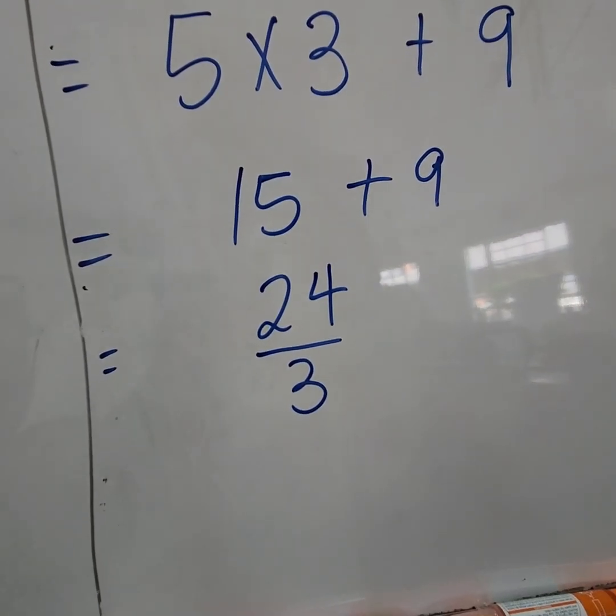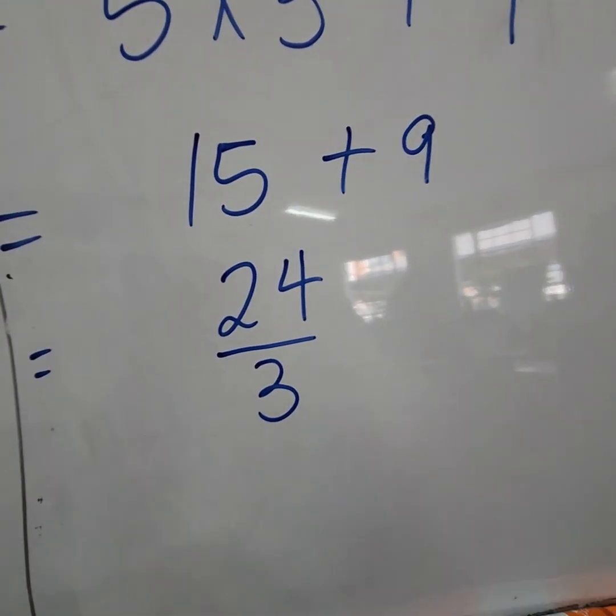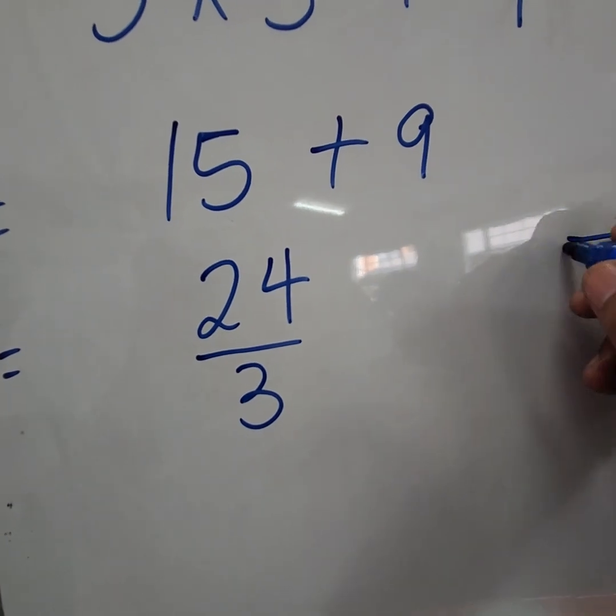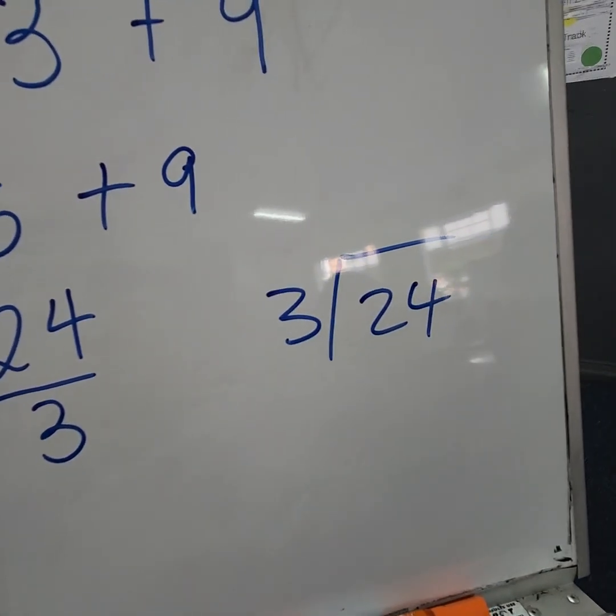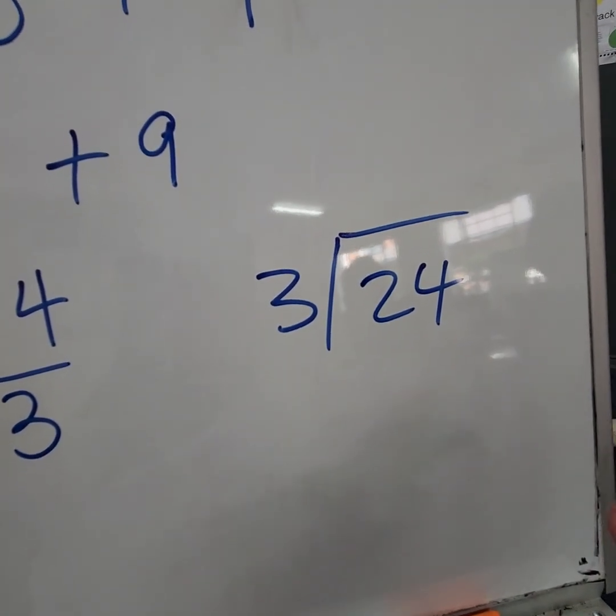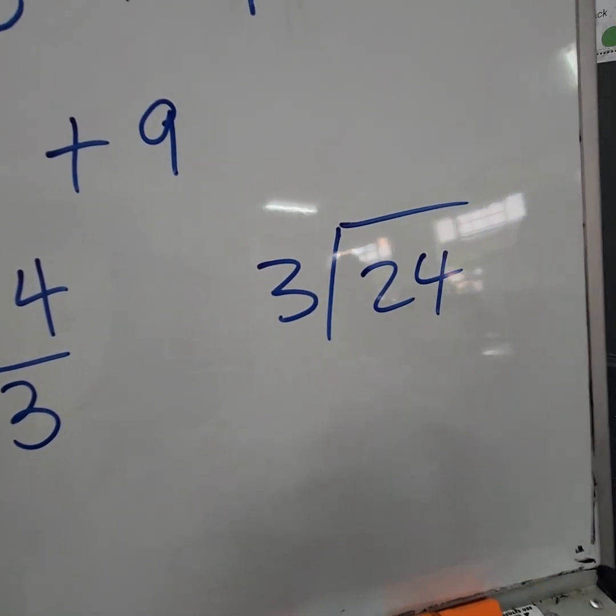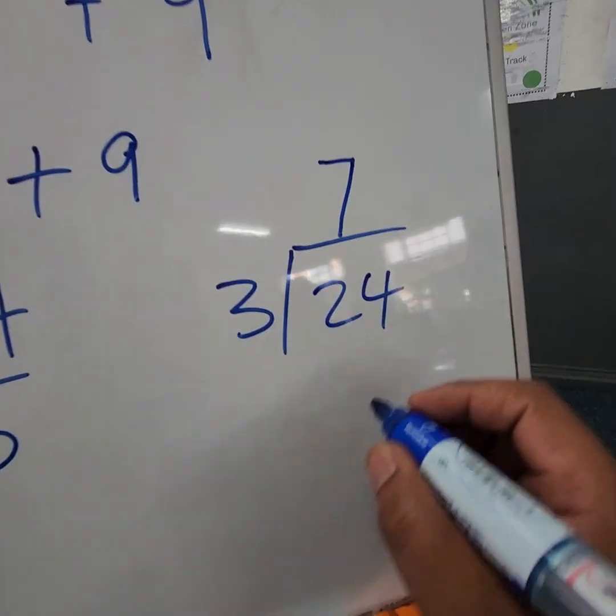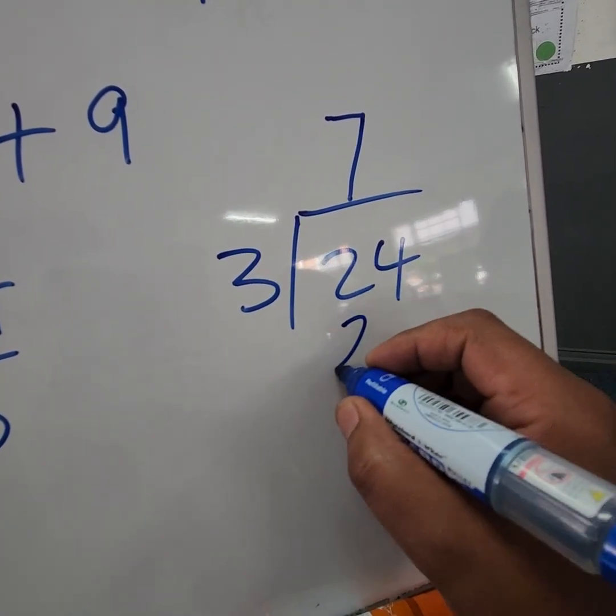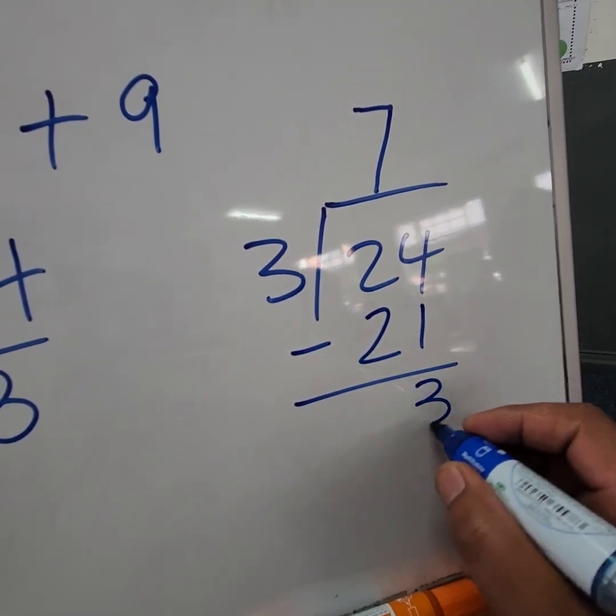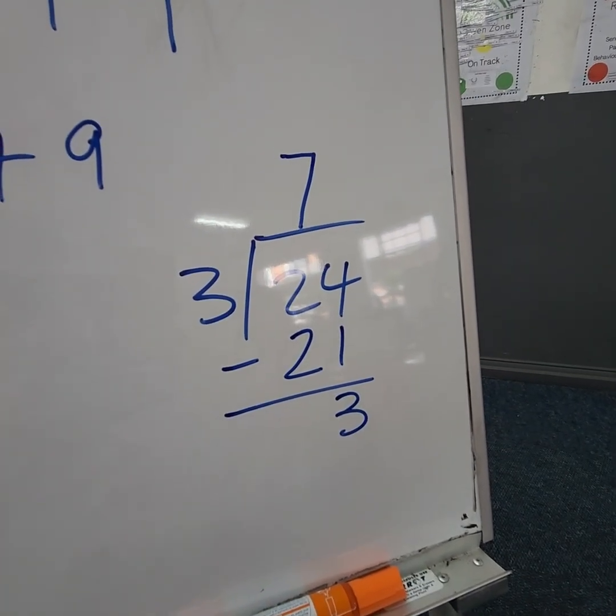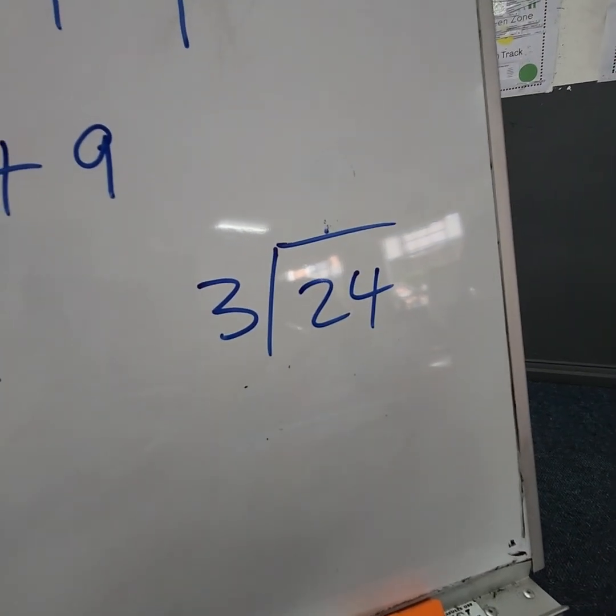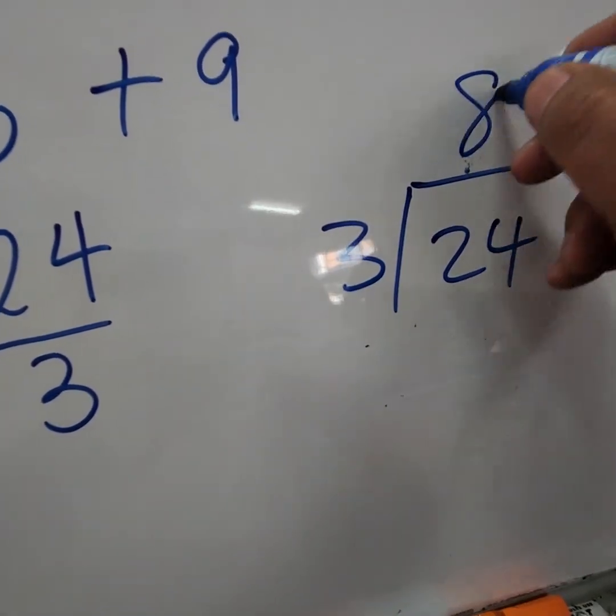So same thing applies. We say 3 into 24, or 24 divided by 3. So we go 3, 6, 9, 12, 15, 18, 21, and then that gives us 7. But that still leaves us with 3, which means our calculations were wrong. Then we start over. Then we go again: 3, 6, 9, 12, 15, 18, 21, 24. Then that gives us an 8. 8 times 3 is 24.